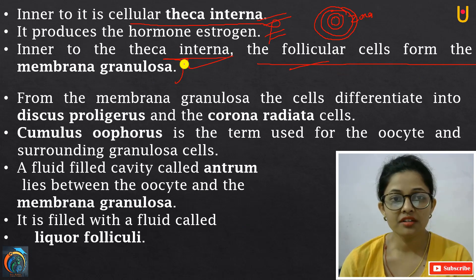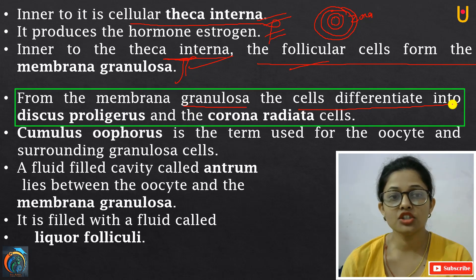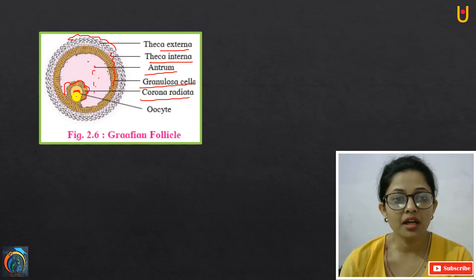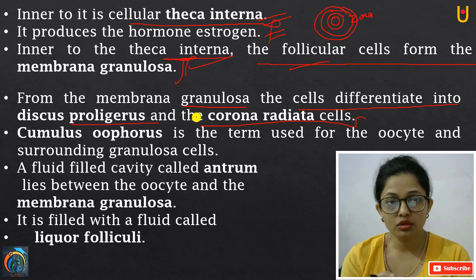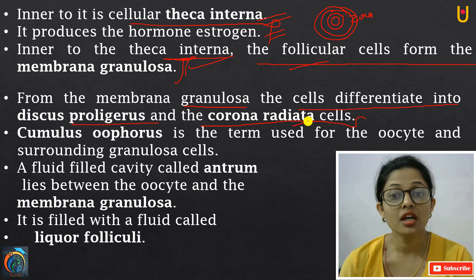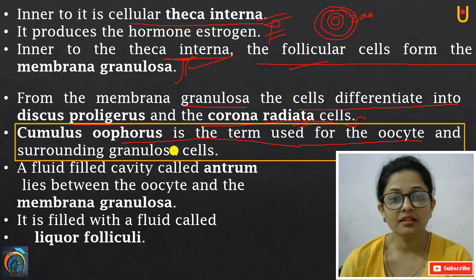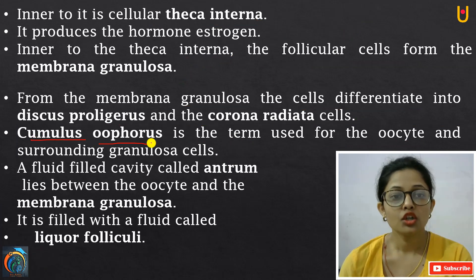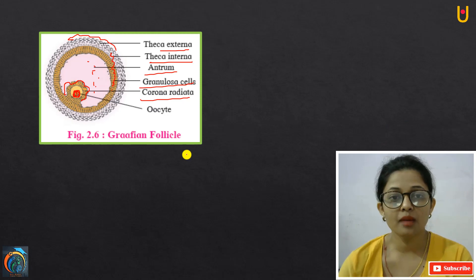Theca interna has another layer called membrane granulosa. From the membrane granulosa, cells differentiate into the discus proligerus and the corona radiata cells. The term cumulus oophorus is used for the oocyte and surrounding granulosa cells.